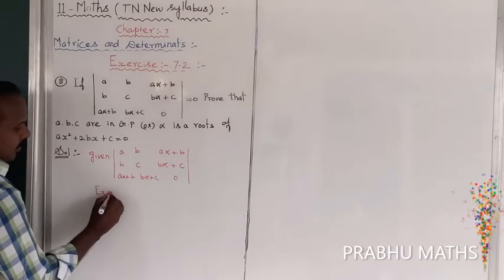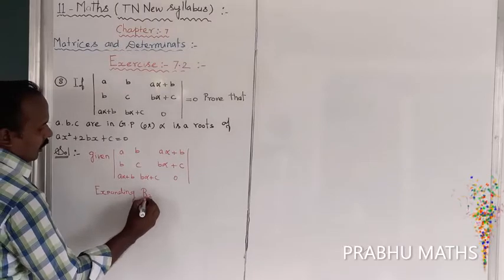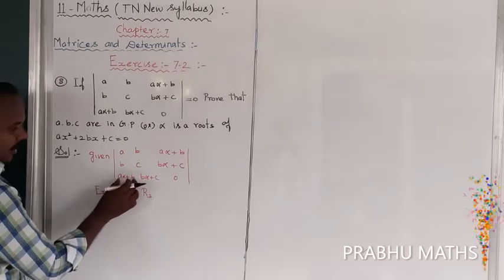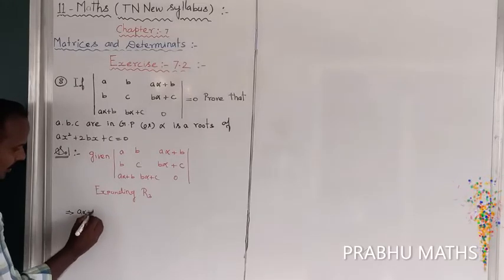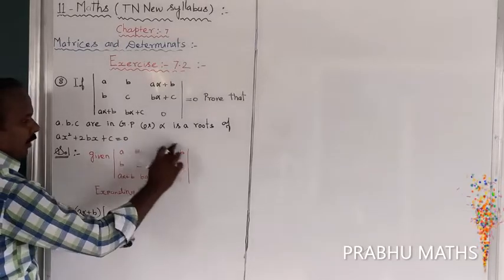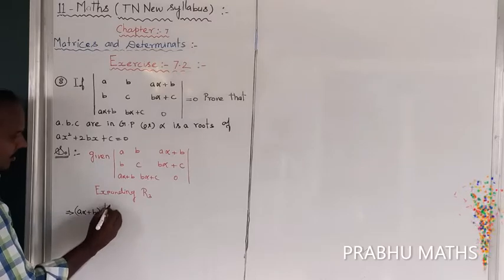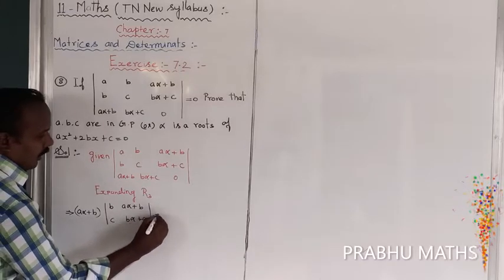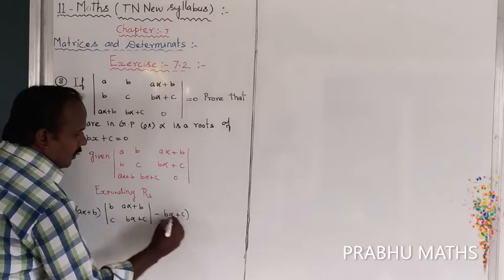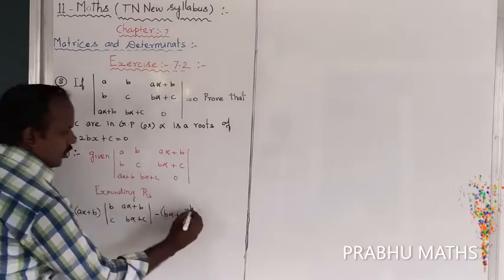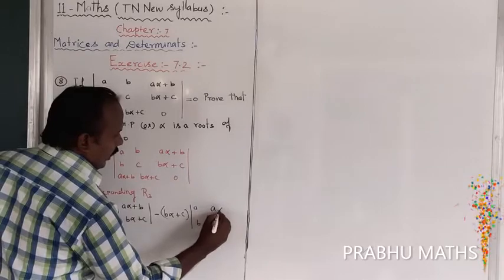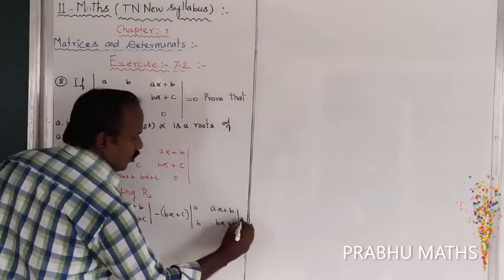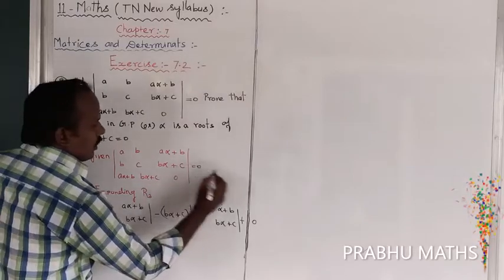Expanding along R3. So expanding R3, which implies A·alpha plus B — the entire column and row closed, the minor value is B, C, A·alpha plus B, B·alpha plus C. Next, the entire column and row closed — A, B, A·alpha plus B, B·alpha plus C. Next one is 0, so the full value should be 0. That is given.